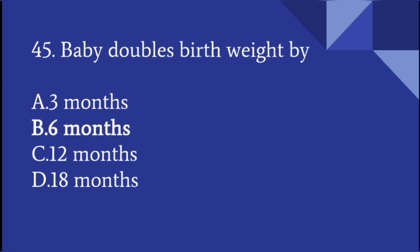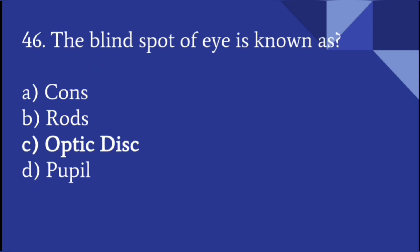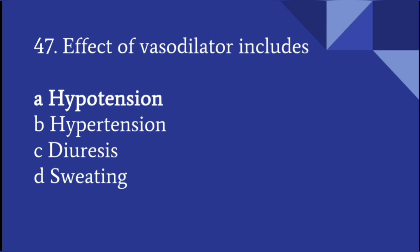A baby doubles its birth weight by 6 months. The blind spot of the eye is known as the optic disc. The effect of vasodilators includes hypotension.